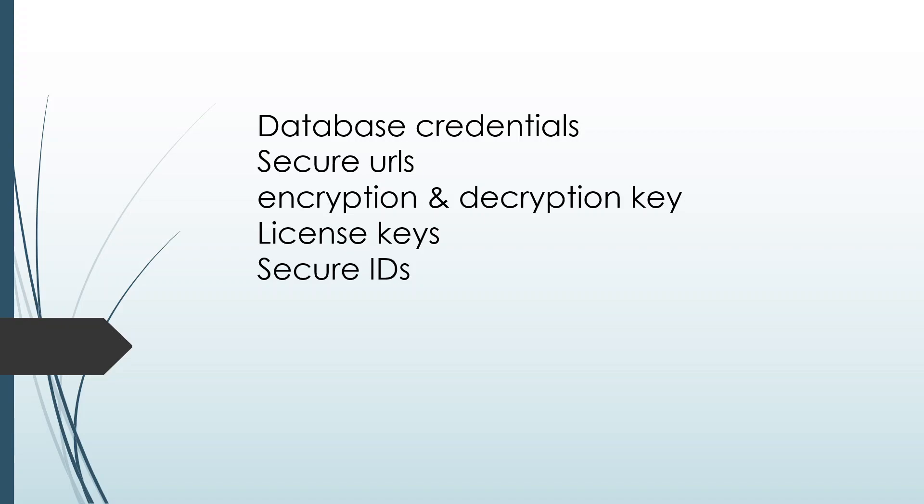When we deploy applications to AWS and want to maintain configuration data outside the application, we need to store it in an isolated place. The first service that comes to mind is S3. In the early days of cloud, developers used to maintain configuration in S3 as an object. Whenever credentials or encryption keys were needed, they would retrieve the object from S3. However, S3 is not meant to store configuration data — it is an object storage service for files and documents.